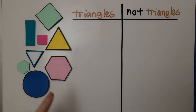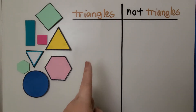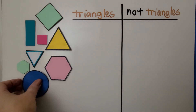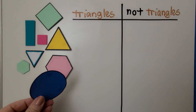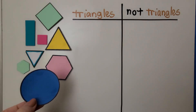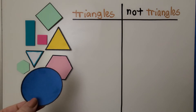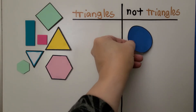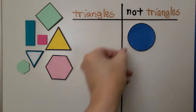Here we have many shapes. We can sort them into sets of triangles and not triangles. We can use the information that a triangle has three straight sides to help us. Is this a triangle? No, this has a curve going around it. This is a circle. That's not a triangle. We can put it with not triangles.